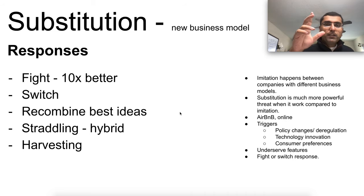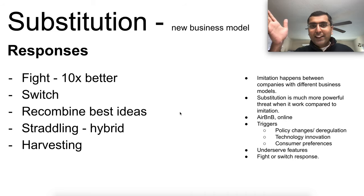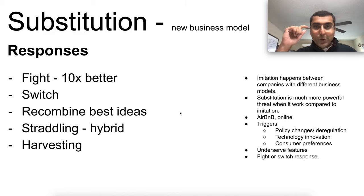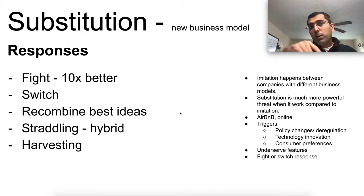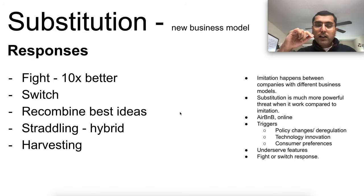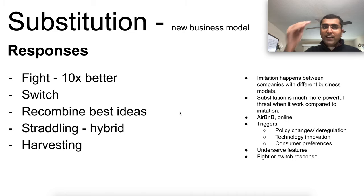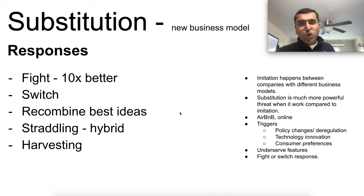Substitution happens between business models — for example, the hotel industry being substituted by Airbnb, a completely different business model. Hotels will have a really hard time unless they fight and make their product 10x better, like Intel did with their chips when facing performance issues from RISC chips. Intel made their product dramatically better. So if you can fight and make your product 10x better, that's one option against substitution.